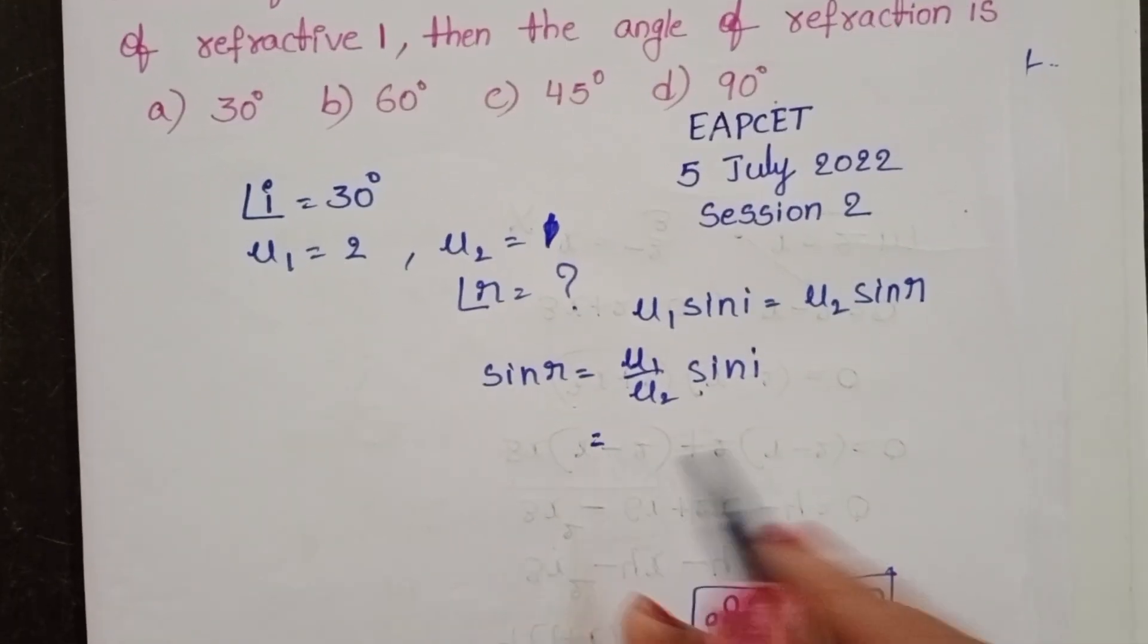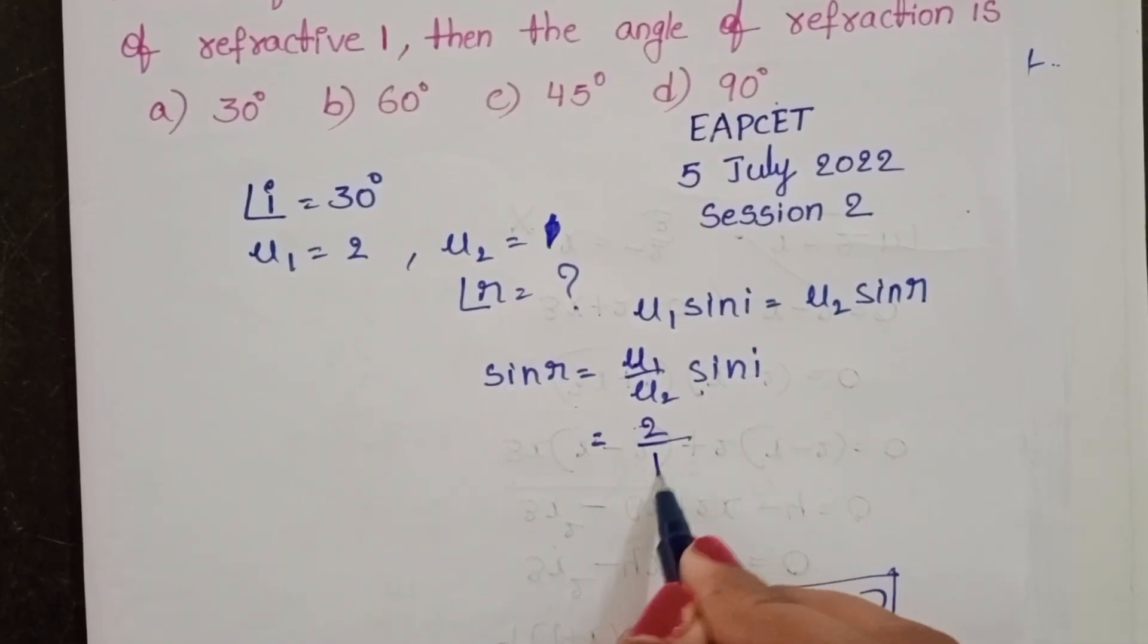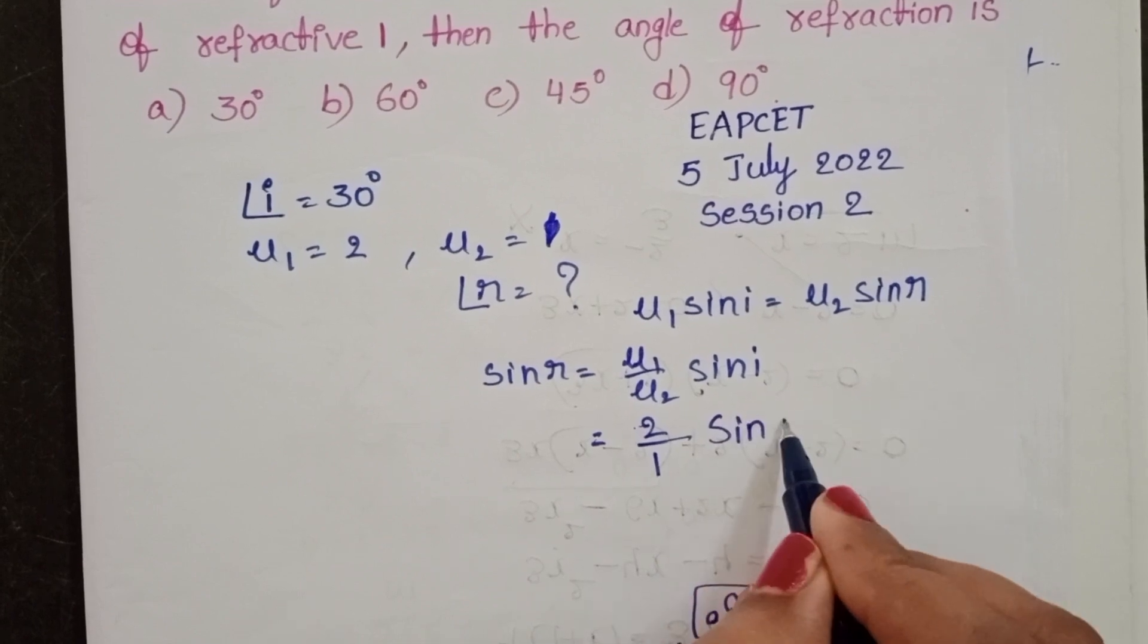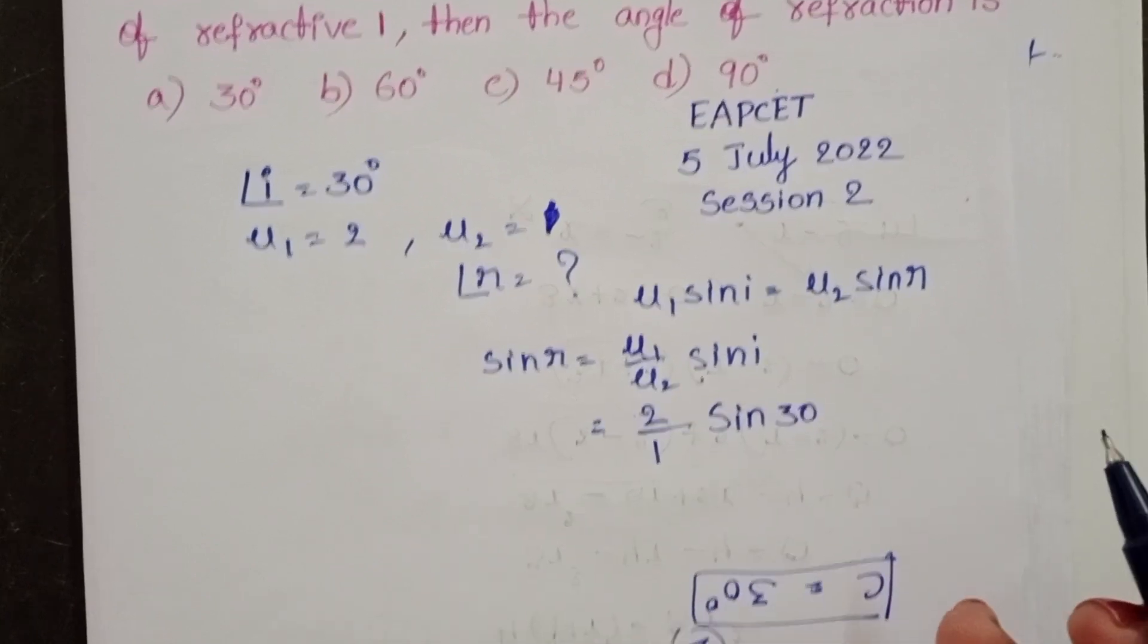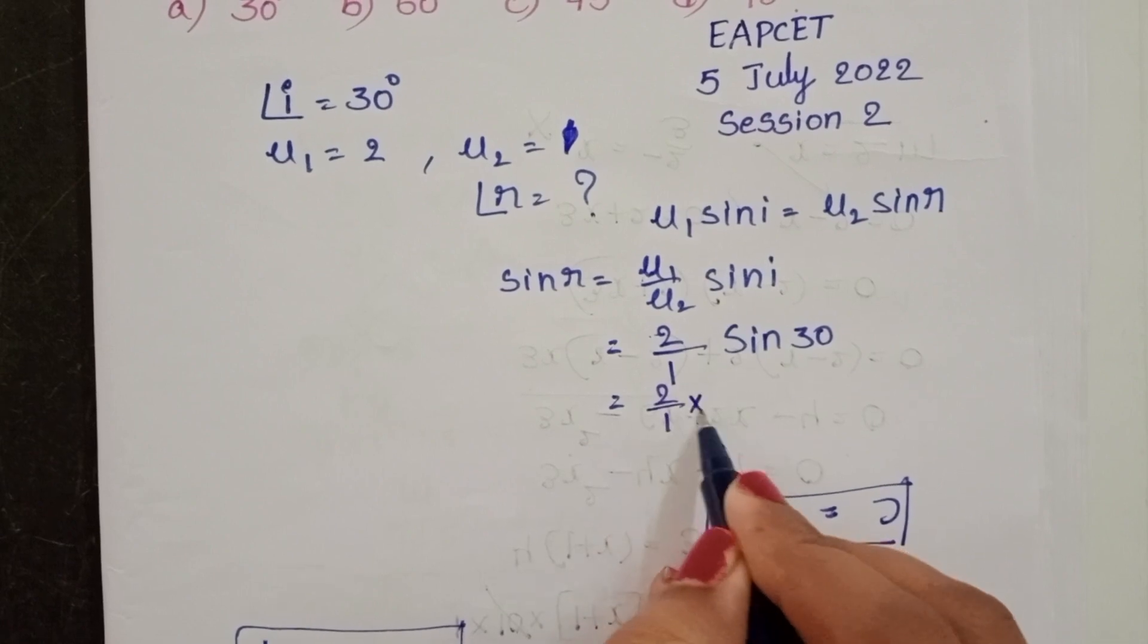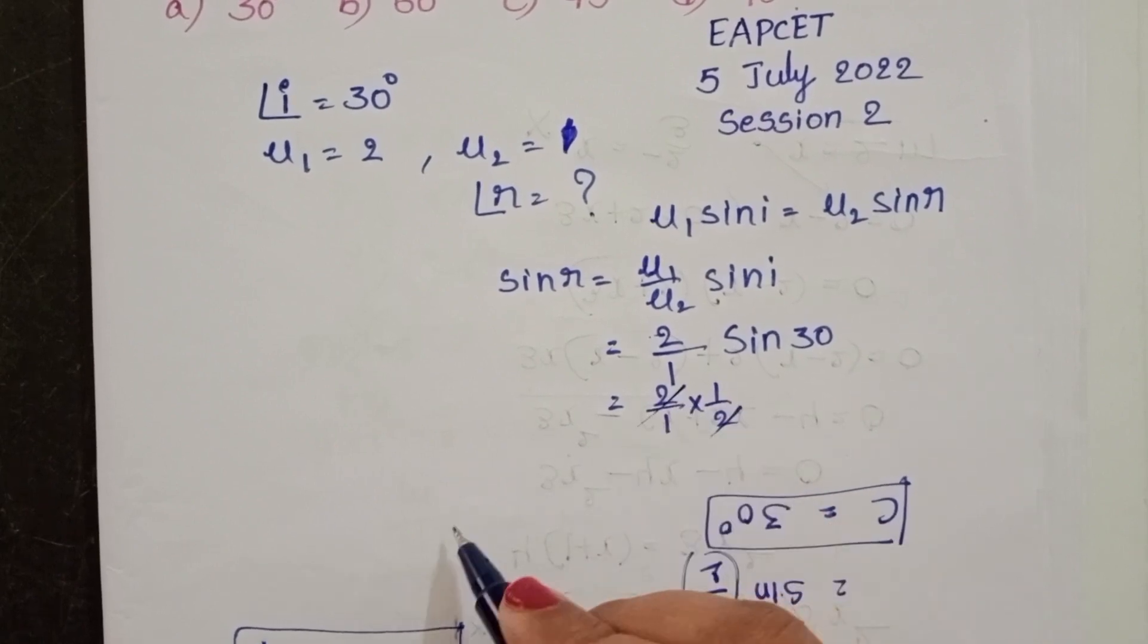Substitute the values. Mu1 is 2, mu2 is 1. The angle is 30 degrees. Sin 30 value is 1 by 2. So 2 by 1 into 1 by 2, the 2s get cancelled.